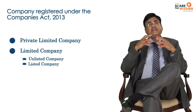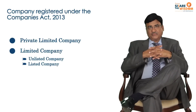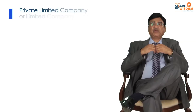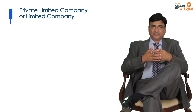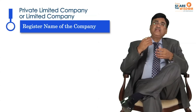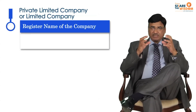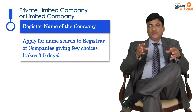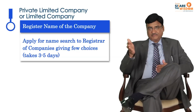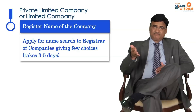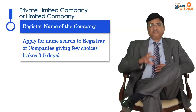After deciding that you want to form a company — say a private limited company — you first need to decide the name of that company. It is advisable to have two or three alternate names and apply to the registrar of companies for the availability of the name.